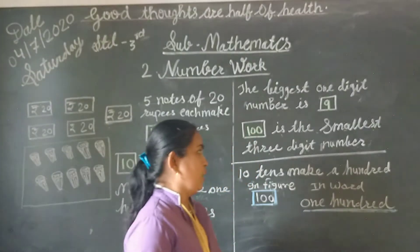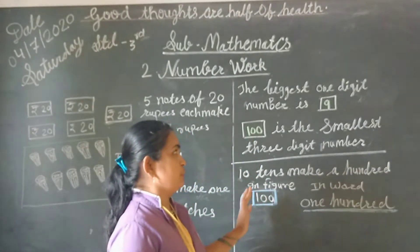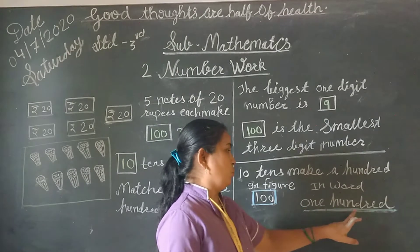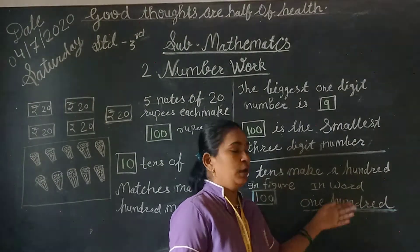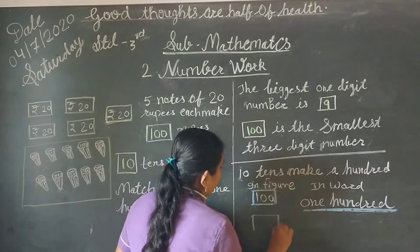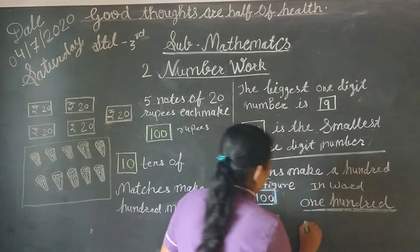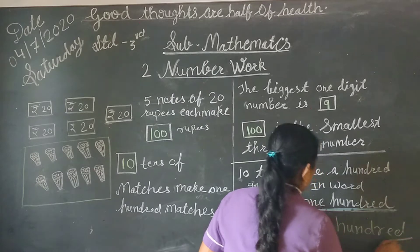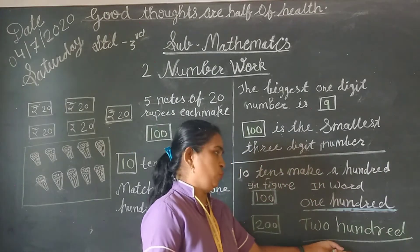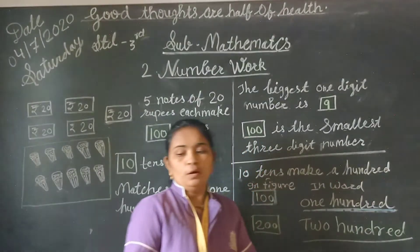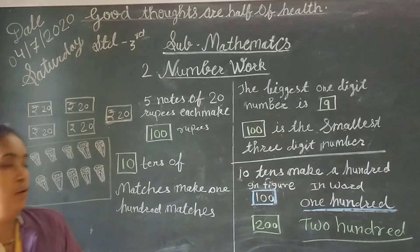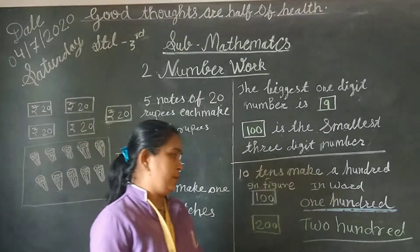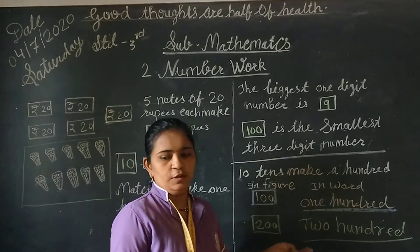Let us remember all these numbers. One hundred is written as 1-0-0, spelled H-U-N-D-R-E-D. If you need to write two hundred, you write T-W-O H-U-N-D-R-E-D, figure 200. Similarly, 300, 400, 500, 600, 700, 800, 900 are all 3-digit numbers.